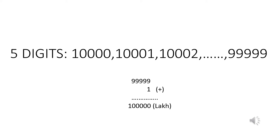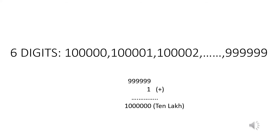When we add 1 to the greatest five-digit number 99,999, we get 1 lakh — 1 followed by 5 zeros. 1 lakh is the smallest six-digit number.